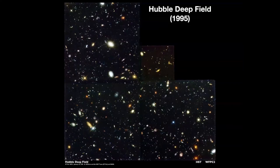The Hubble Deep Field was taken in 1995. The idea was to point Hubble at the same seemingly blank spot of sky for several hundred hours and see what we could find. This was one of the key goals of Hubble when it launched — to discover what the distant universe looked like, which was one of Spitzer's original ideas. In this image there are actually 1,500 galaxies of all sorts of ages. This image really changed the field of astronomy because it showed us for the first time that there were galaxies in the very early universe.